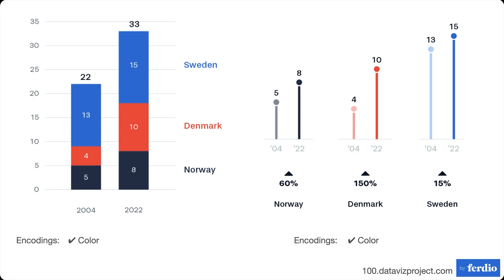First, both of them are using the encoding channel of color. They're using color to represent different things. In this version, we're representing different sites with color, and we have a different luminance representing the different years. Here, we just have the different countries represented in color. So they both have color going on.